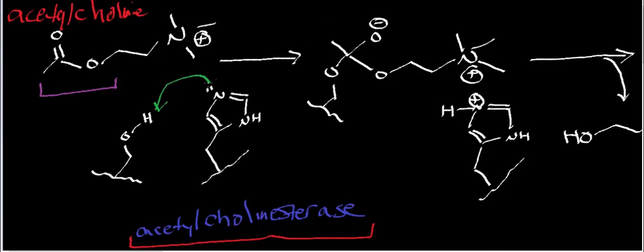But in any case, the first step of the mechanism is deprotonation of the serine residue. And then these electrons right here come out and attack the carbonyl carbon, generating a tetrahedral intermediate.